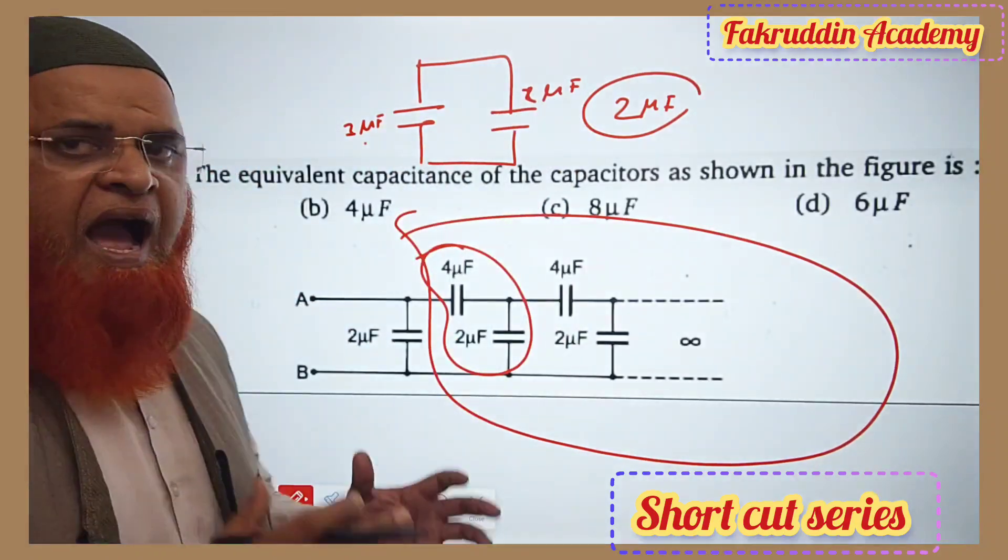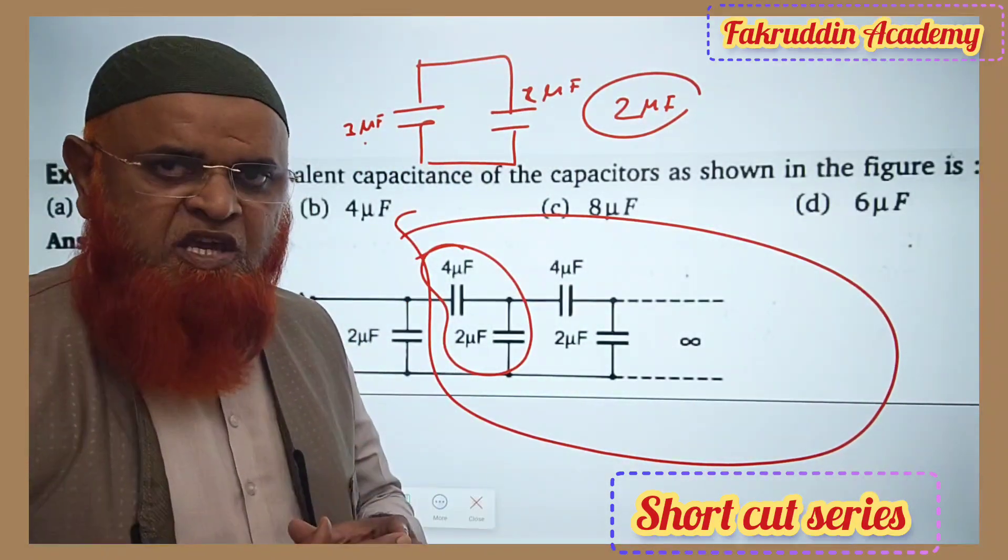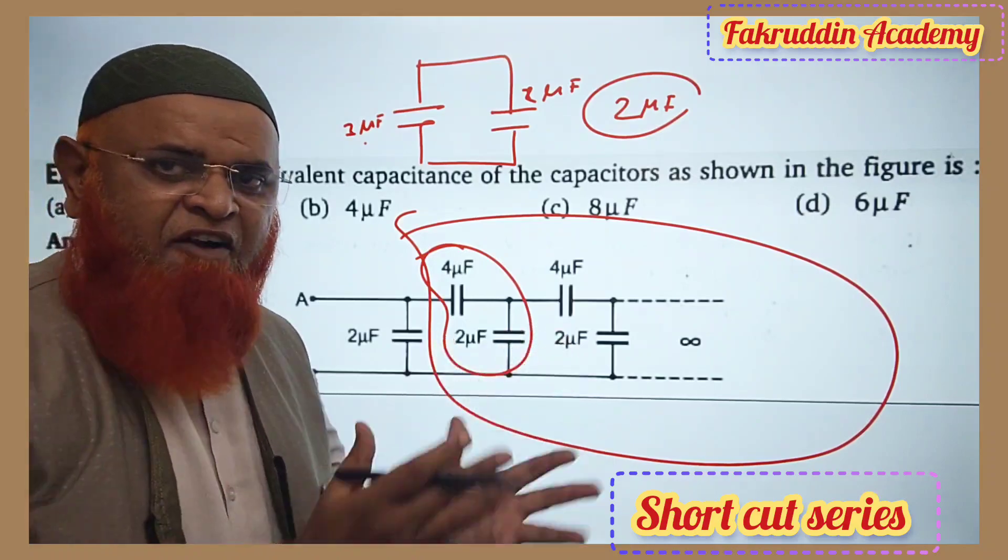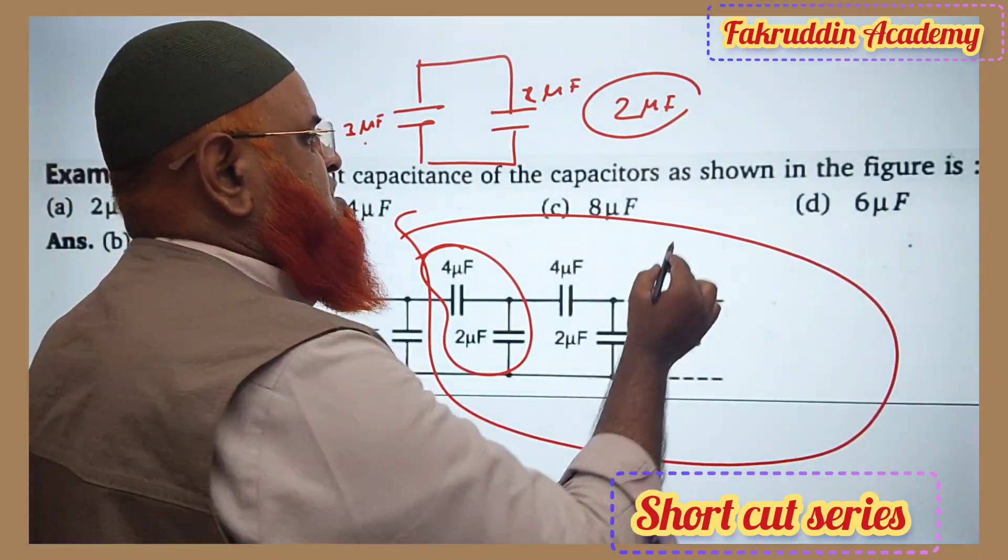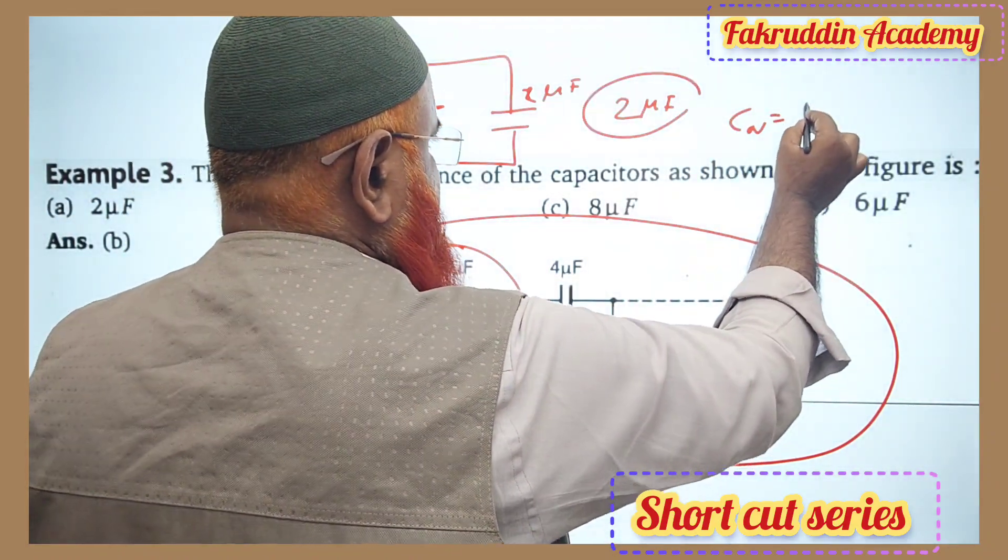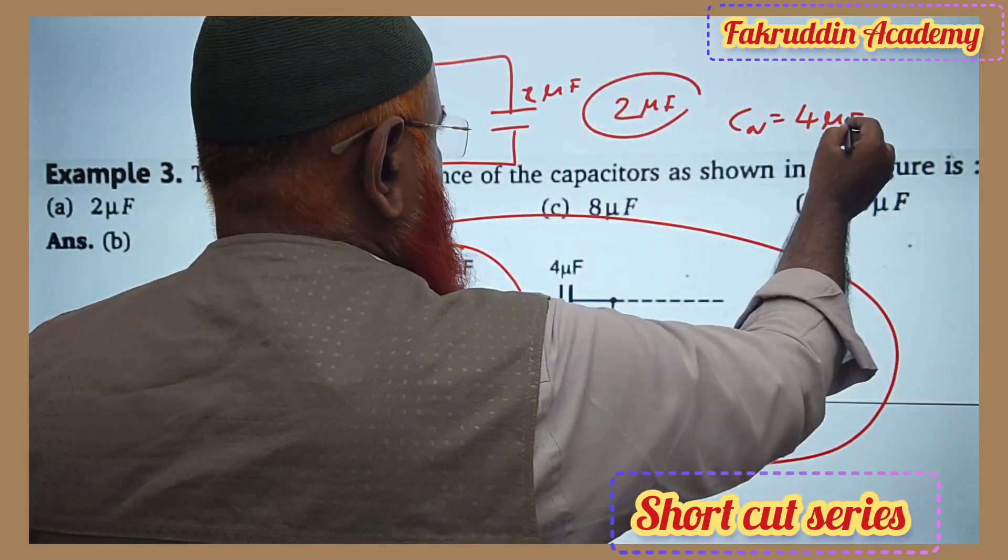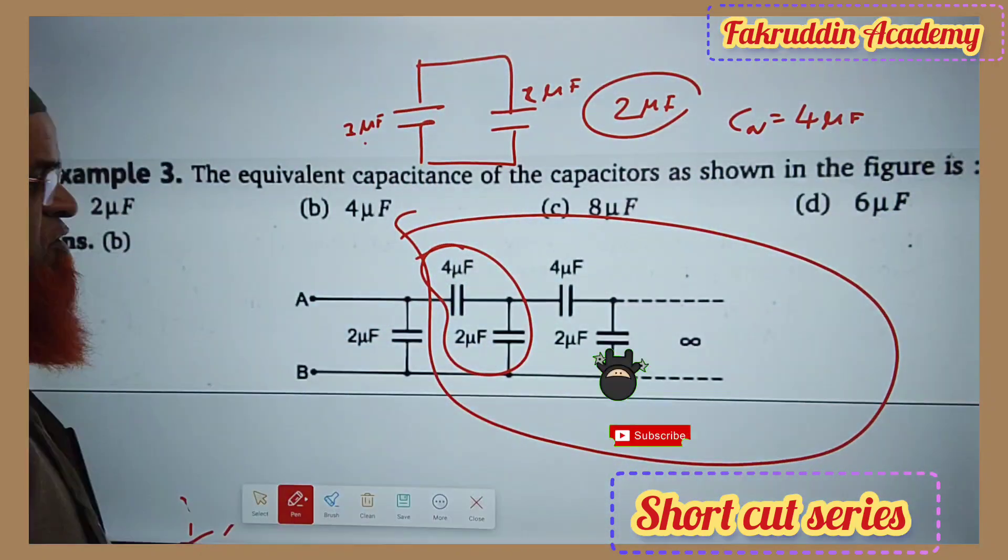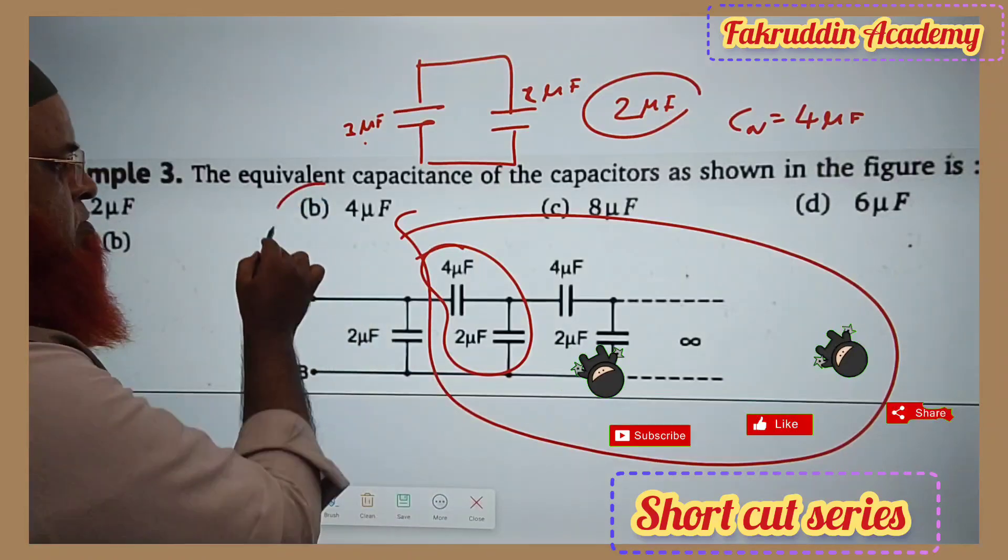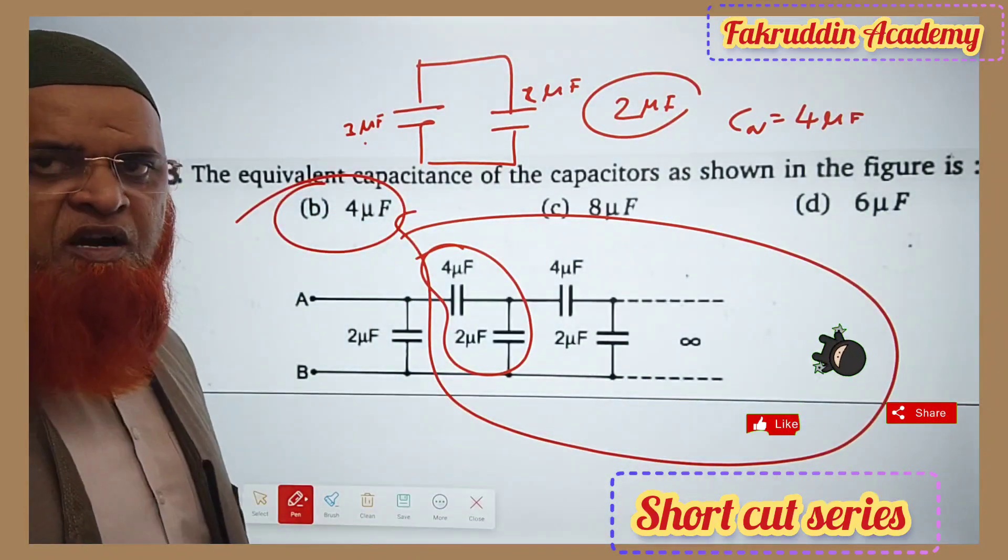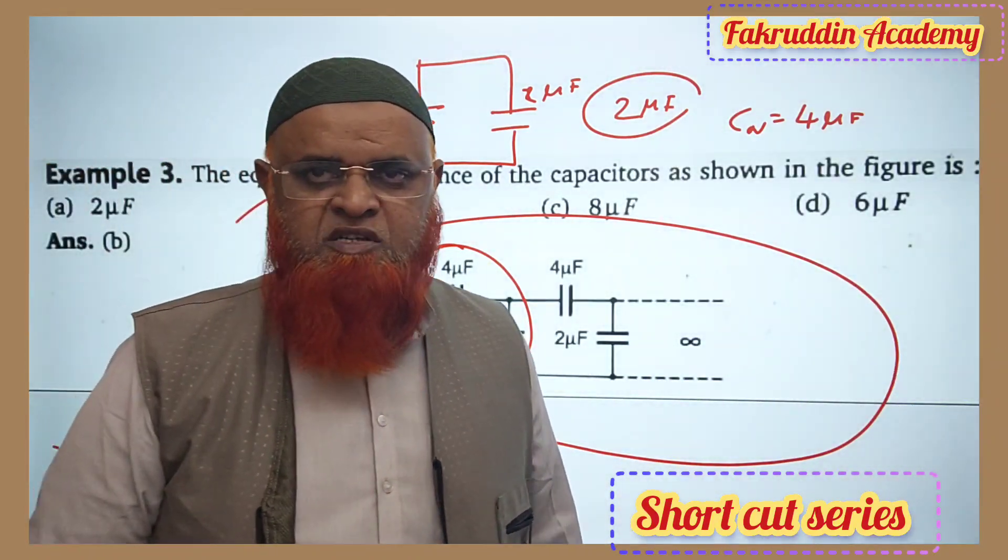This is 2 and this is 2. As both are going to be parallel, you have to add them, and your answer is going to be C net is equal to 4 microfarads—that is 2 plus 2 here. So therefore, your answer is going to be 4 microfarads. Hope you have enjoyed this shortcut. Thank you very much.